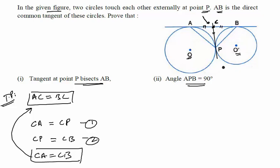We have to prove that angle APB is 90 degrees. To do that, let us consider the triangles formed.